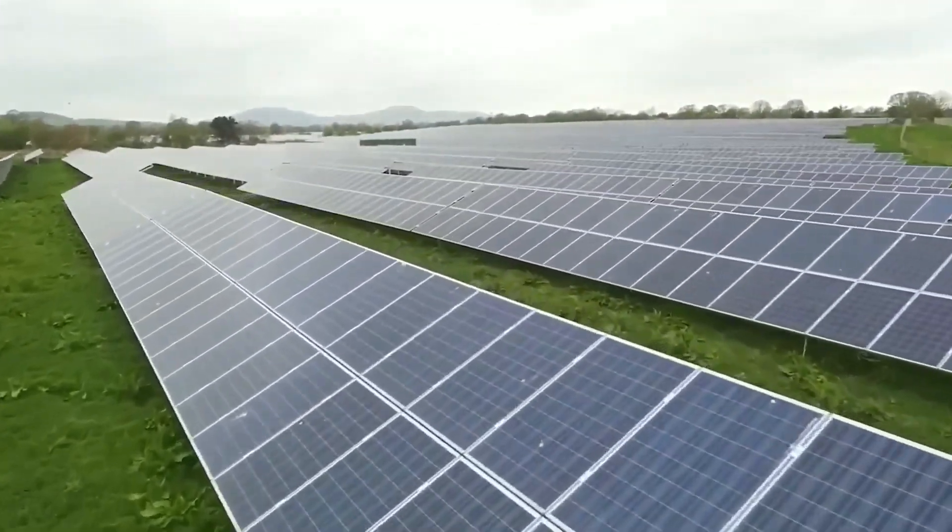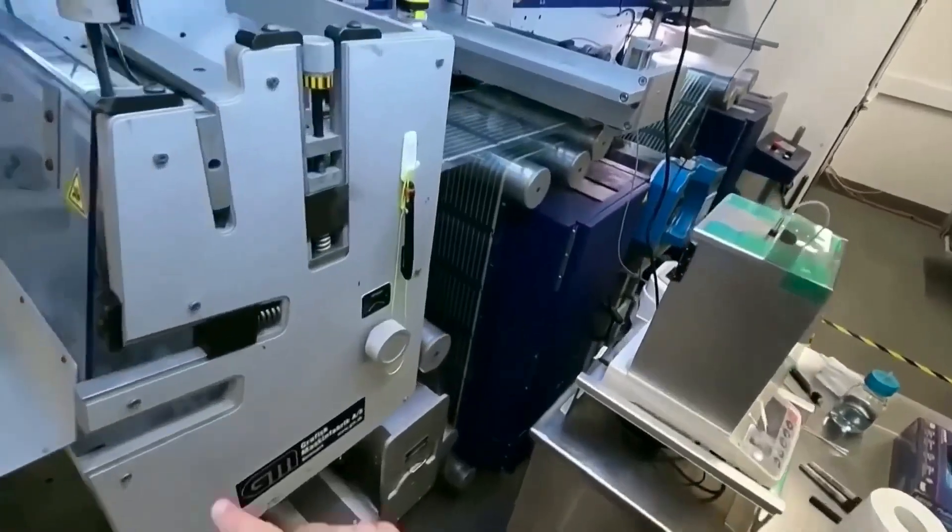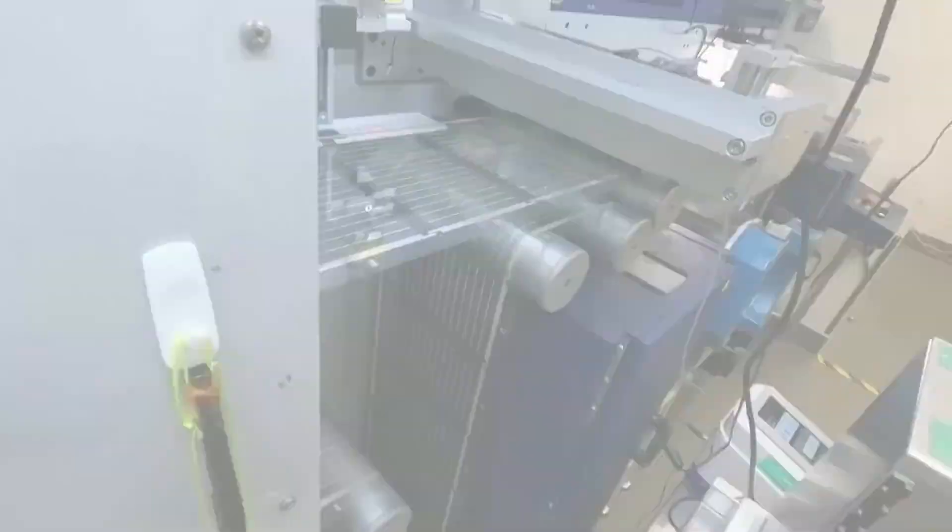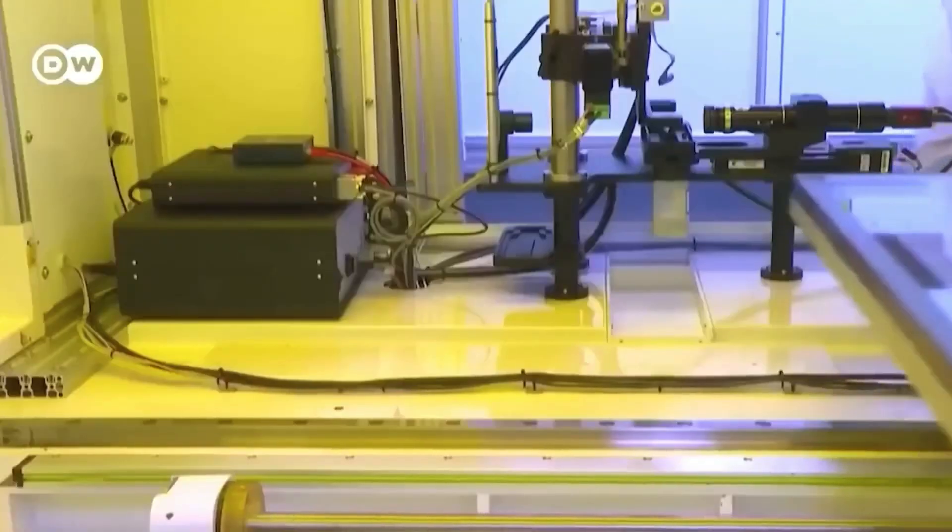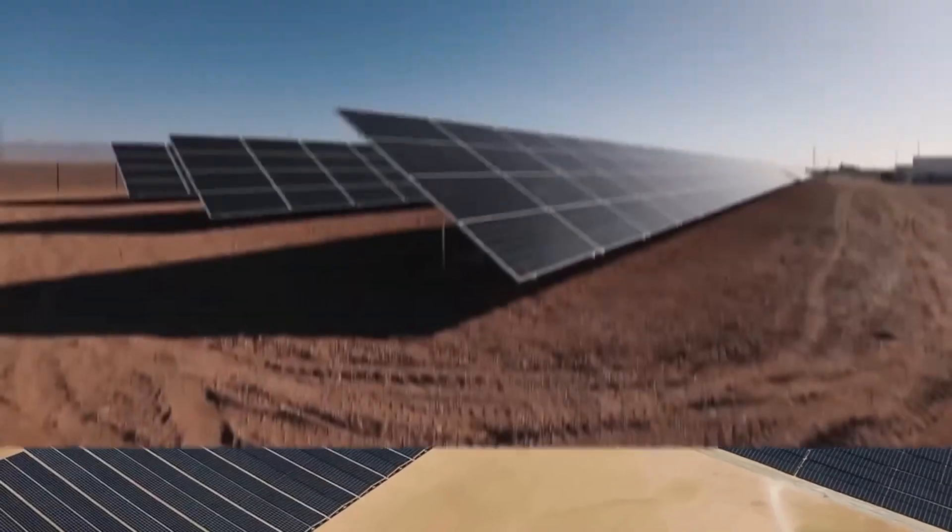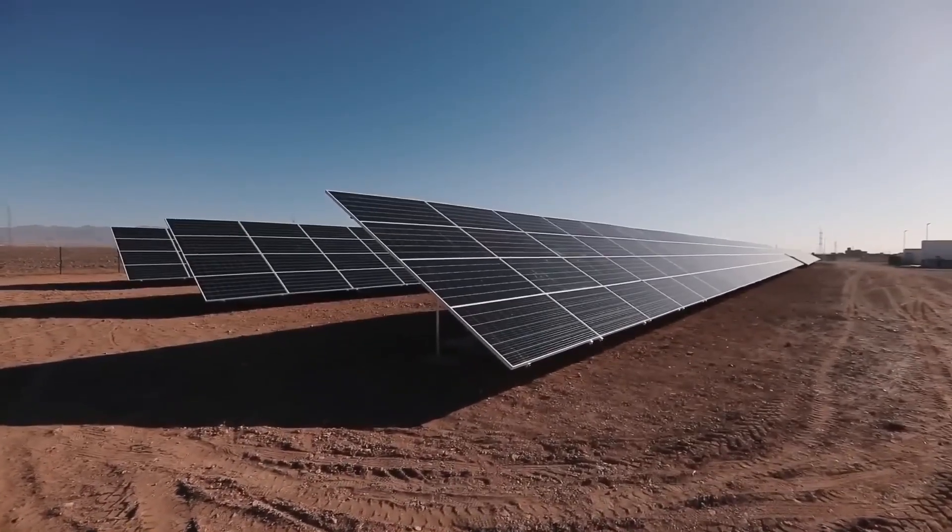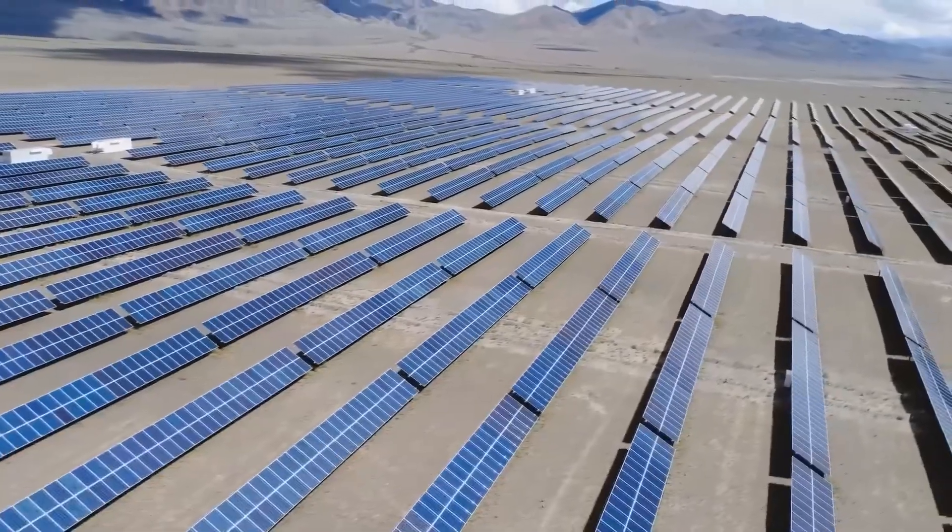Monocrystalline and polycrystalline solar panels are the two most popular forms for home use. Individual wafers for monocrystalline solar panels are cut from a single ingot. The monocrystalline cell ingots are distinctively black in color and have a regular cell structure. Monocrystalline solar panels are the most effective and provide the best performance, with ratings ranging from 17% to 22%.